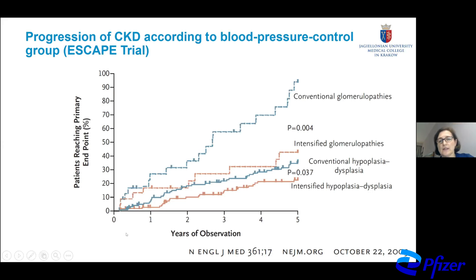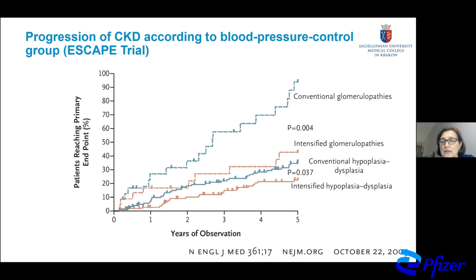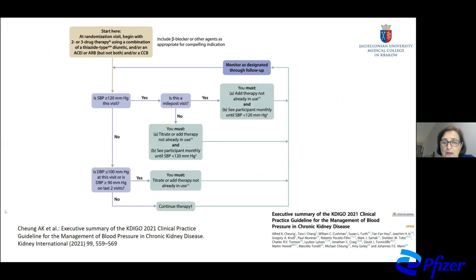In a very important study, the ESCAPE trial showed that in children with chronic kidney disease, intensified hypotensive treatment slows the progression of CKD in children with glomerulonephritis and also in those with hypoplasia and dysplasia. The primary endpoint was the start of end-stage kidney disease — when children required renal replacement therapy or a decrease in GFR by 50%.